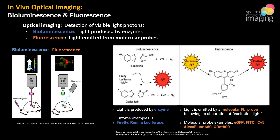In vivo fluorescence imaging utilizes a fluorescent reporter — a molecule that emits a photon when excited by a particular wavelength of light. Fluorescent reporters can be proteins, dyes, nanoparticles, or quantum dots.